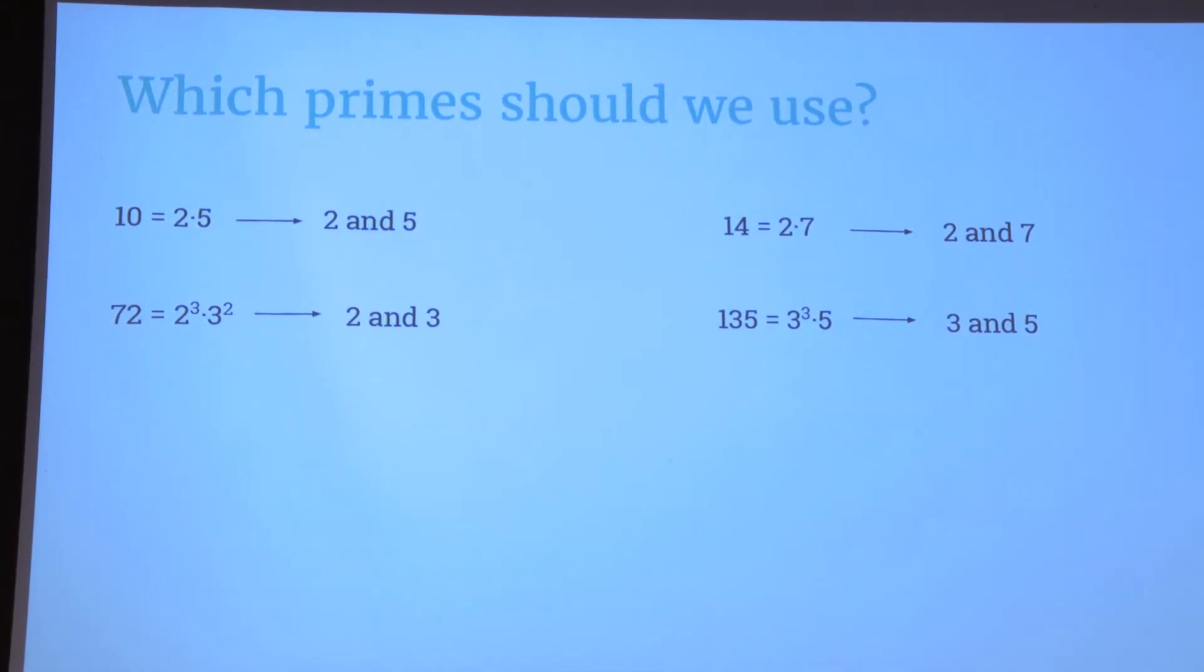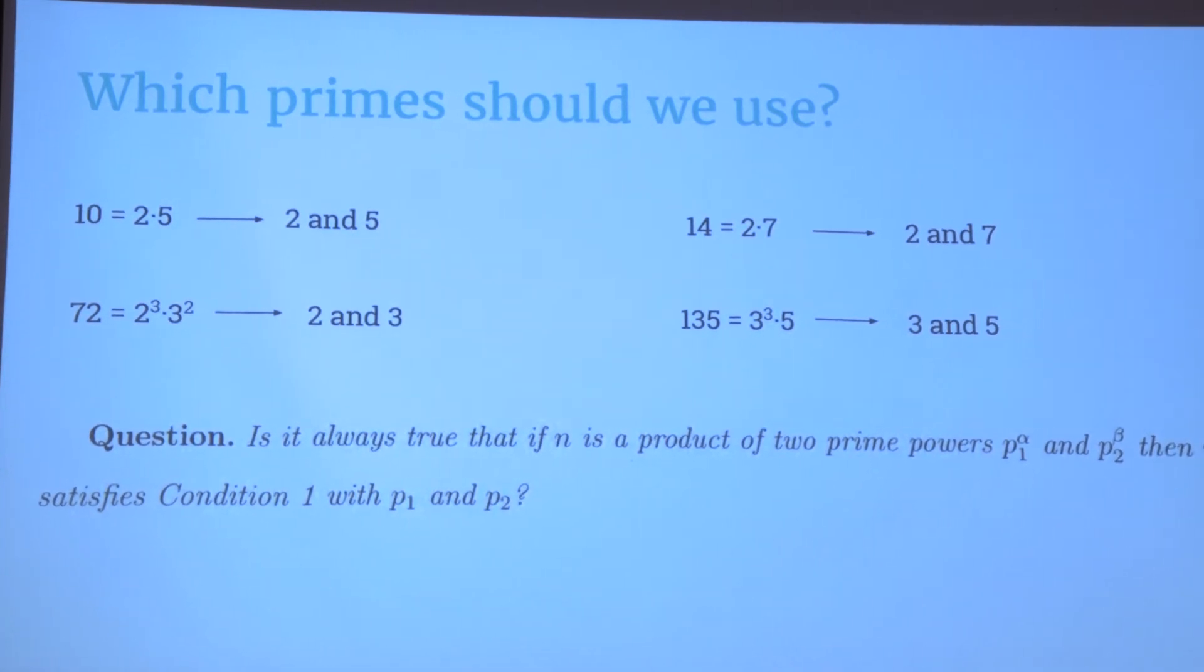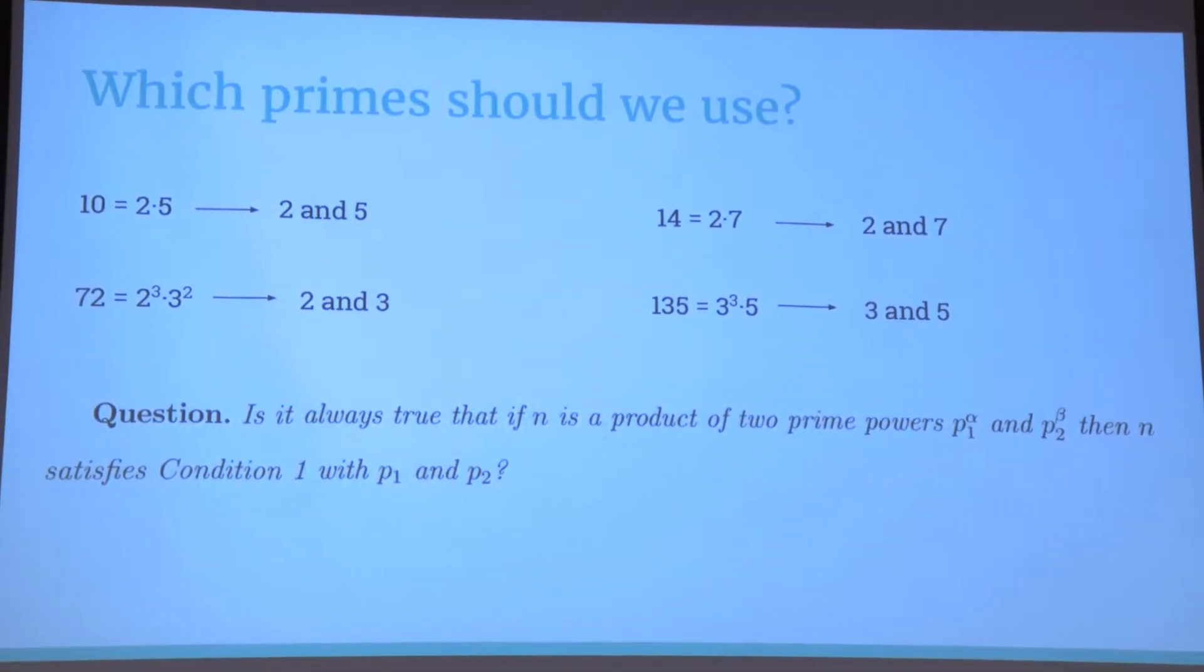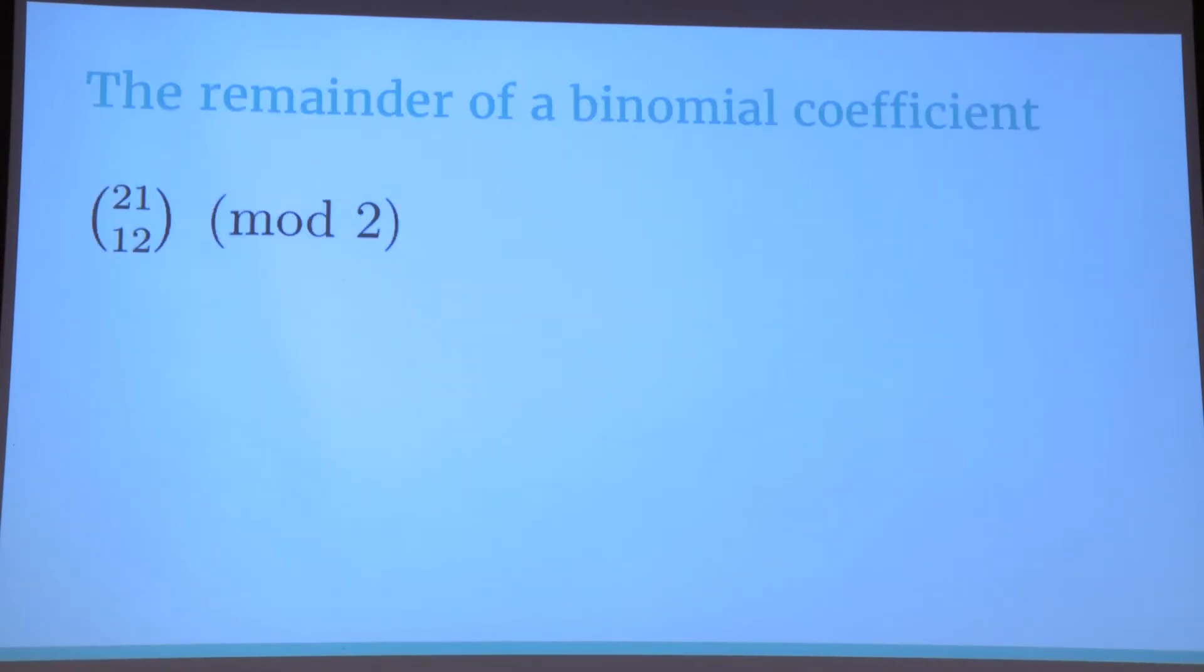What does your intuition tell you? You may be wondering, is it always true that if n is a product of two prime powers, then n satisfies condition 1 with these two primes? It looks that it's correct. And I can tell you the answer is yes. But before we get to the proof, we need some background information.